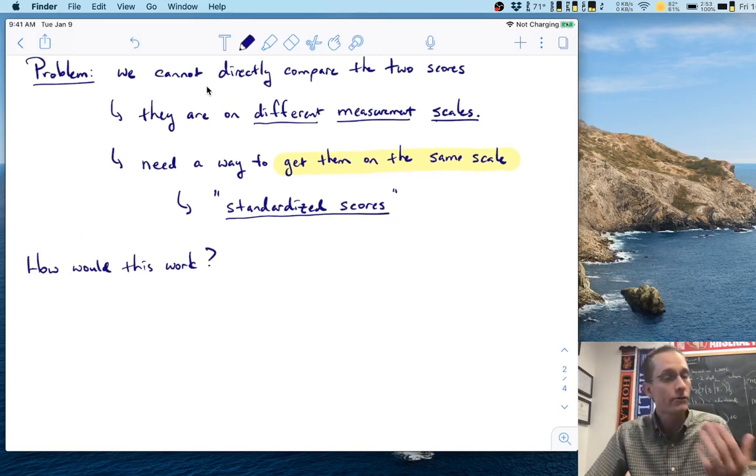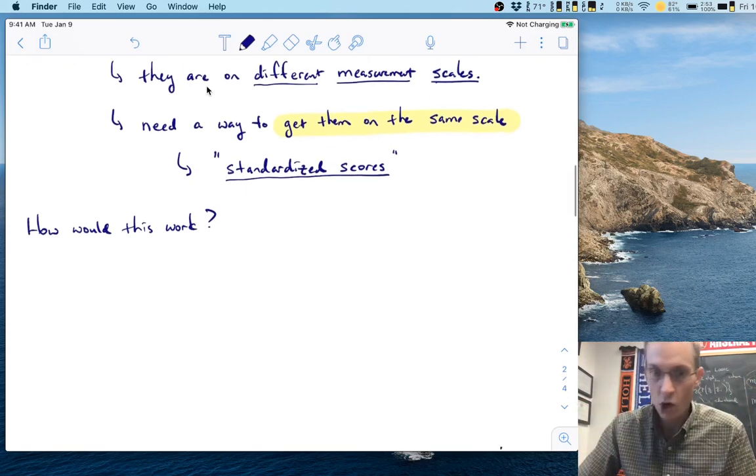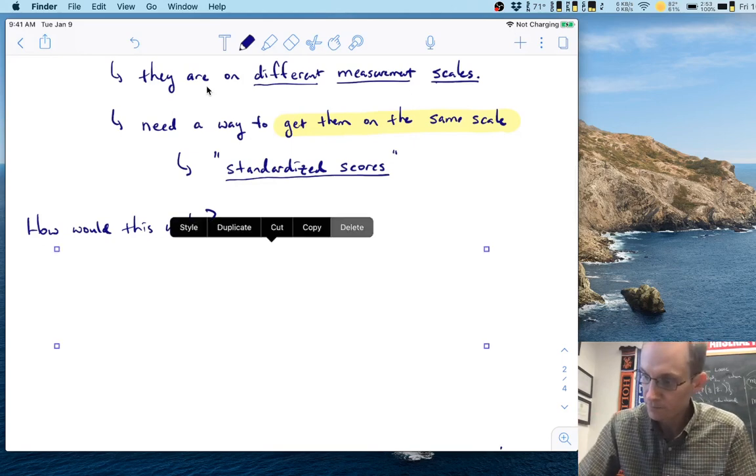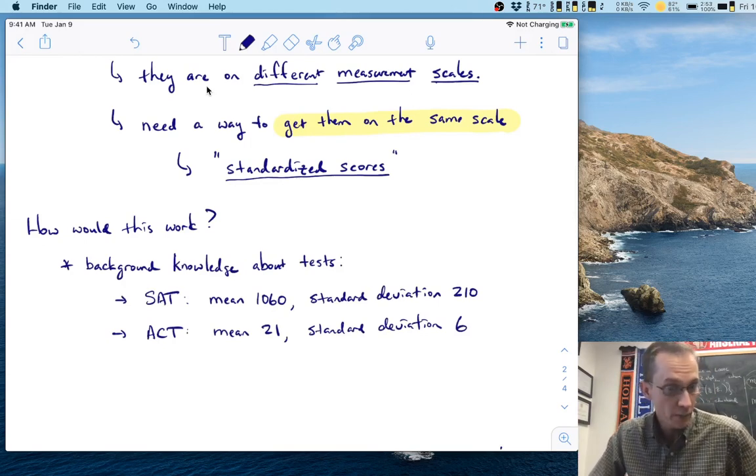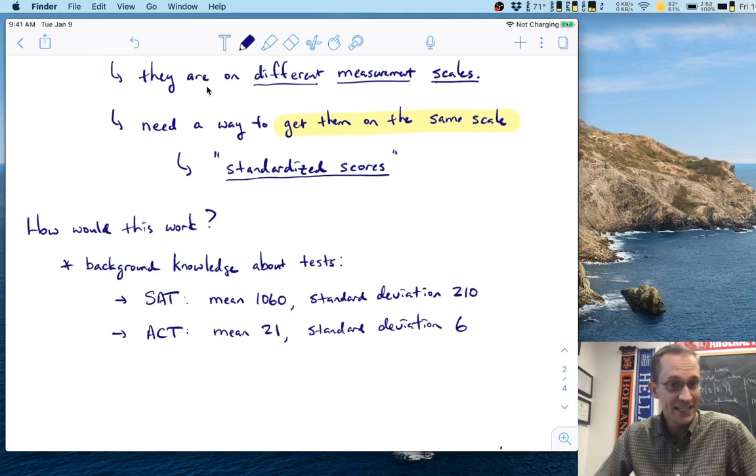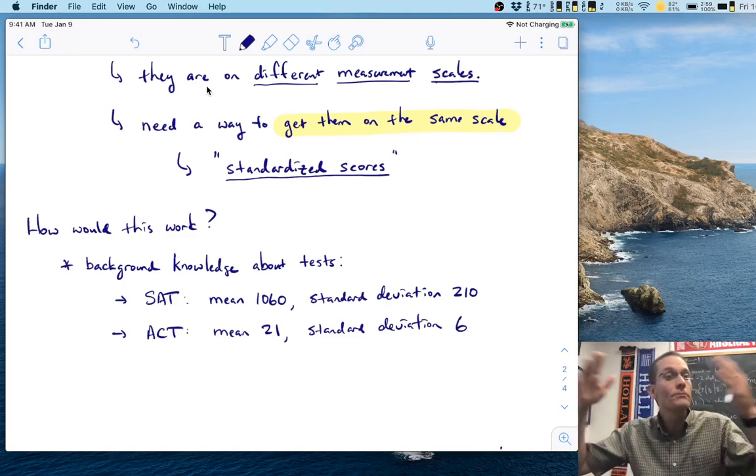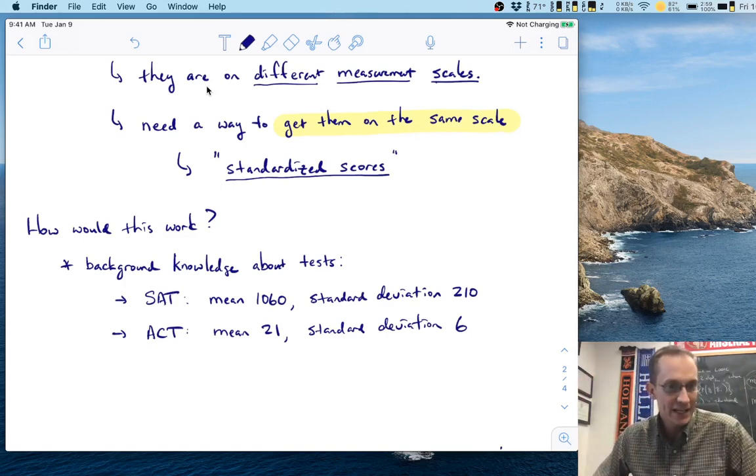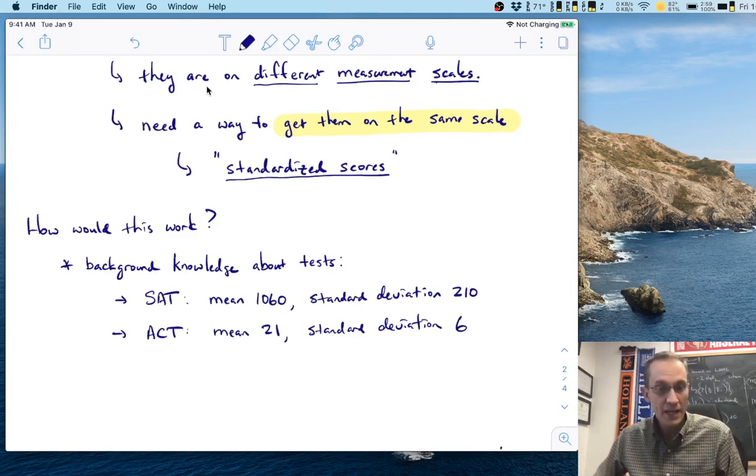So how would this work? How would we go through a process of standardization and get to be able to compare these two applicants on the same scale? Well, first of all, we need some background knowledge about the tests. Now we know what each person scored. We know that applicant one scored a 1270 on the SAT. And we might ask, well, how does that compare to the average person? Or how does that compare to the distribution of people who would have taken the SAT? And we can ask the same thing for the ACT.